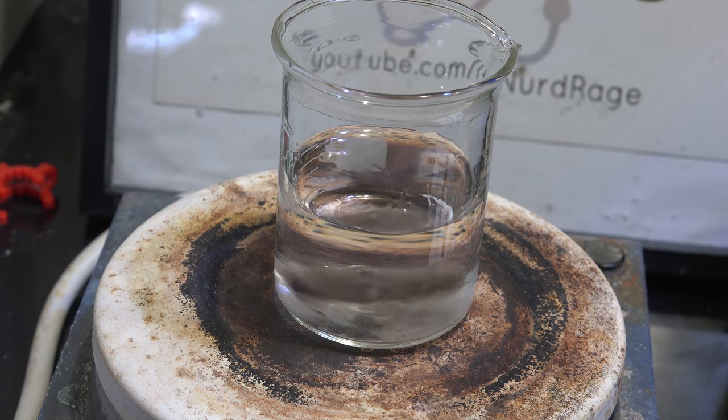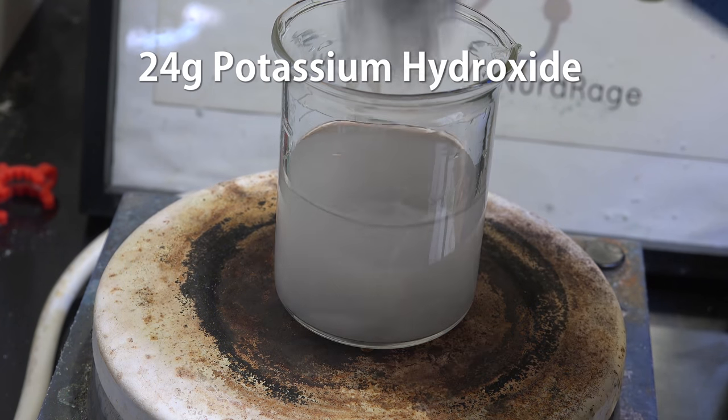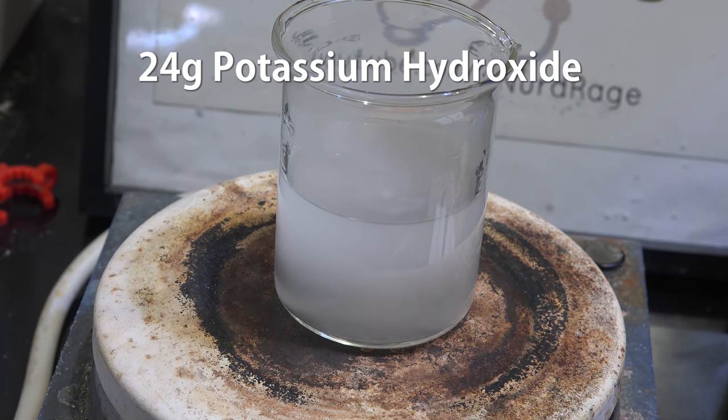First let's make our electrolyte. We get 80mL of water and add in 24g of potassium hydroxide. Stir until it dissolves.